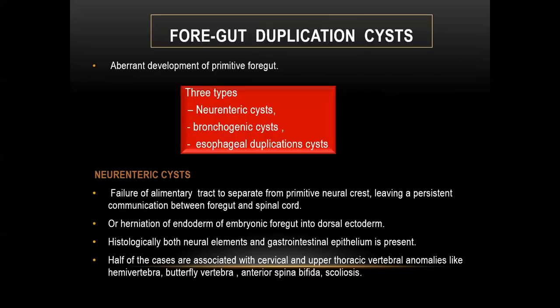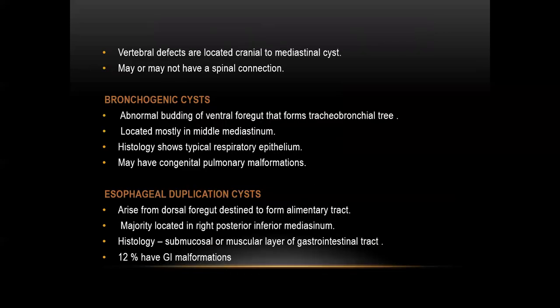Coming to the discussion, foregut duplication cyst is an aberrant development of the primitive gut. This includes predominantly three types: neurenteric cysts, bronchogenic cysts, and esophageal duplication cysts. Neurenteric cysts represent failure of the alimentary tract to separate from the primitive neural tube, leaving a persistent communication between the foregut and the spinal cord, or herniation of the endoderm of the embryonic foregut into the dorsal ectoderm. Histologically, both neural elements and gastrointestinal epithelium are present. Half of the cases are associated with cervical and upper thoracic vertebral anomalies like hemivertebrae, butterfly vertebrae, anterior spina bifida, and scoliosis. Vertebral defects are located cranial to the mediastinal cysts. They may or may not have a spinal connection; sometimes a fibrous band connection with the spinal cord is seen.